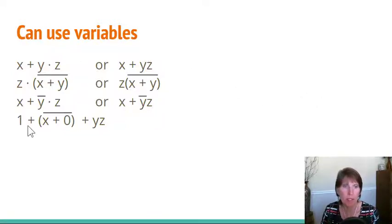We can use variables in Boolean algebra, and x, y, and z are common ones that are used. a, b, c are common as well. We can also use a combination of variables and literals, so having an x and a 0 in the same expression is allowed.